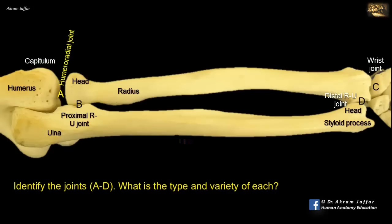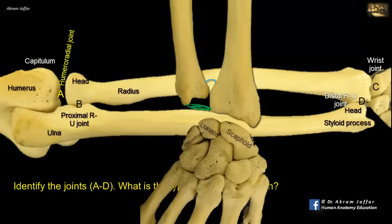C is the wrist joint. The wrist joint is a condyloid type of synovial joint. It allows flexion and extension, as well as adduction and abduction, or what we call ulnar deviation for adduction and radial deviation for abduction. And of course, a combination of these movements is called circumduction. Circumduction is not rotation. It's a combination of flexion, abduction, extension, and adduction. The joint is formed between the proximal row of carpal bones, except the pisiform. These bones articulate with the distal end of the radius and with the triangular ligament located at the distal end of the ulna. So, the ulna does not participate in the formation of the wrist joint. There is a triangular ligament here separating the ulna from the proximal row of carpal bones.